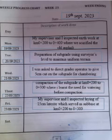On Thursday, it says compaction of subgrade at km 0+200 to 0+300, where the land was watered before compaction. If you have worked in road construction before, you actually know that before compaction, the terrain is watered — this helps in removing voids for more stability.